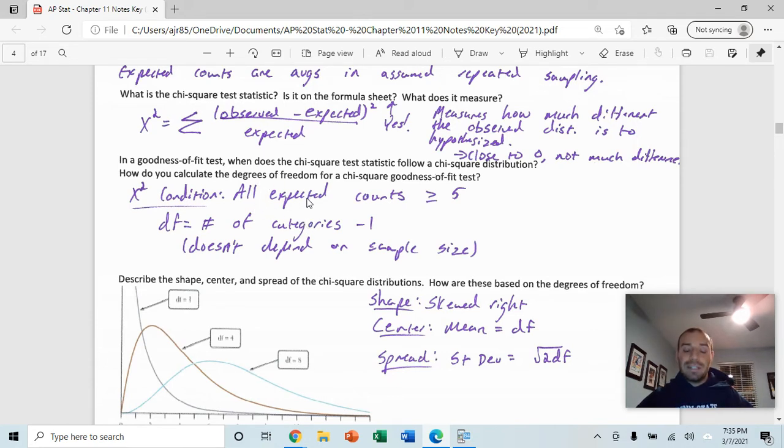The chi-squared conditions. Similar to what we've been seeing, all of the expected counts are greater than or equal to 5. That is a condition for chi-squared. Your degrees of freedom is going to be equal to the number of categories minus 1. The sample size does not matter when we're talking about a chi-squared test.